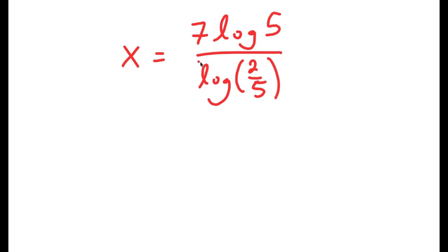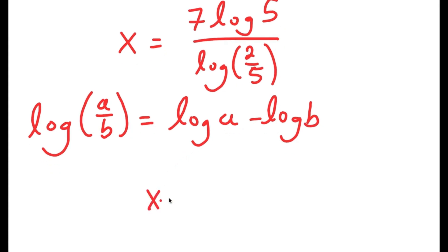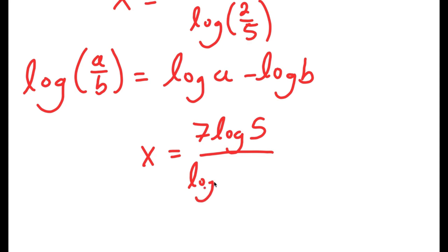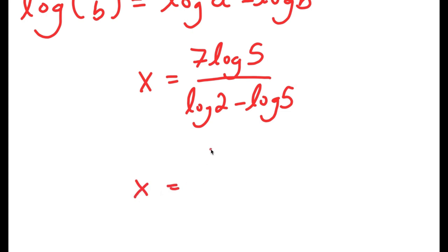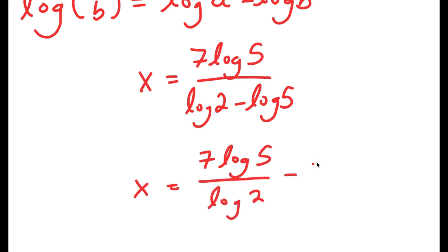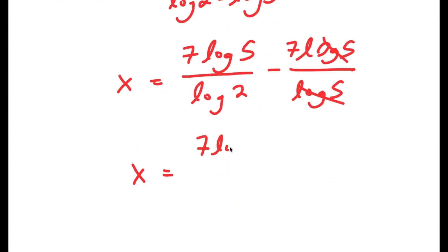This is our solution, but there is a way to simplify it more. If I have log(a/b), that equals log a minus log b. So log(2/5) equals log 2 minus log 5. Substituting that in and simplifying, I get x equals 7 times log 5 over (log 2 minus log 5), which further simplifies to 7 times log 5 over log 2 minus 7.